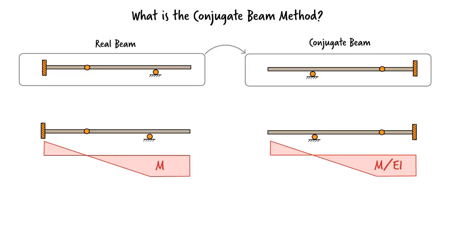According to the conjugate beam method, slope in the real beam is the same as shear in the conjugate beam, and deflection in the real beam is equal to moment in the conjugate beam.